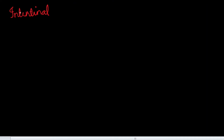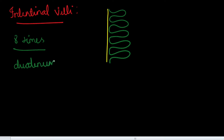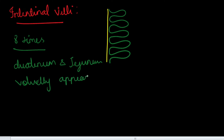The intestinal villi are finger-like projections in the lining of the small intestine. They increase the surface area up to eight times more than the normal surface area. Intestinal villi are mainly seen in duodenum and jejunum, and on examination they give a velvety appearance. At the tips of the villi there is a striated border, which is formed by microvilli, and these also help in promoting the absorptive action of the intestine.